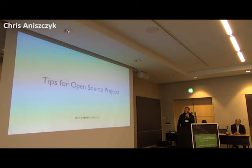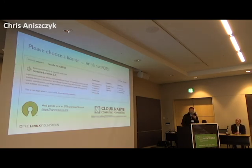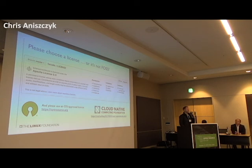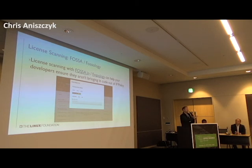Some basic tips before I open up for questions. Choose a reasonable license for your project — don't use custom licenses. There's been a resurgence of open core, weird licenses out there; avoid those at all costs. Just use an OSI-approved license, preferably permissive in my opinion. Use license scanning tools like Fossology, FOSSA, and SNYK — the tools are so much better these days. Anything that gives clarity into the licensing of your software supply chain makes all of our lives significantly easier.